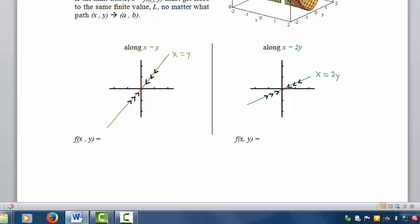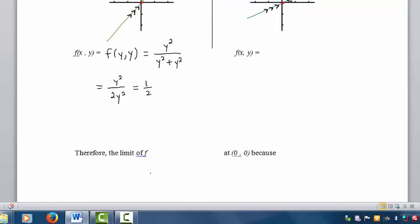Along x equals y, f(x, y) equals the following: f(y, y). Since x equals y, I can make this simplification: y squared divided by 2y squared equals 1 half, since y is not equal to 0. When we evaluate a limit as y goes to 0, we never actually plug in y equals 0.